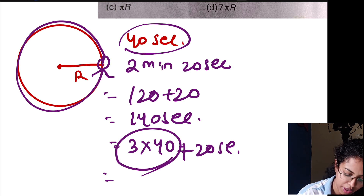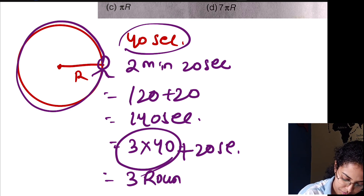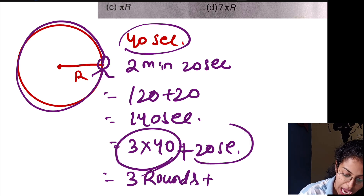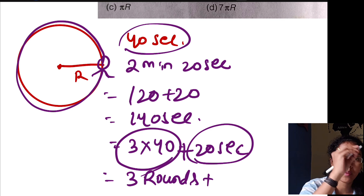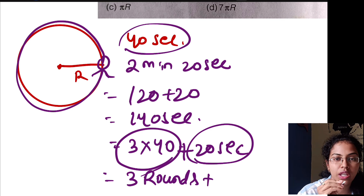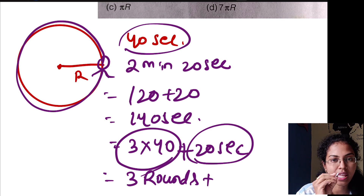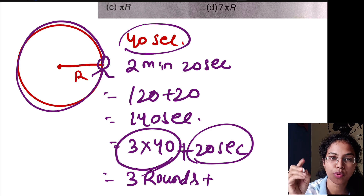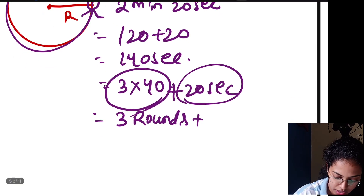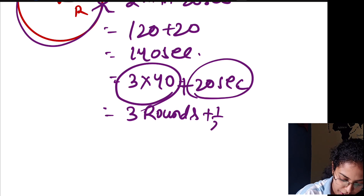3 × 40 seconds means 3 complete rounds. Then 20 seconds remain. Since a full circle takes 40 seconds, 20 seconds is half the circle. So total is 3 rounds plus half a round.